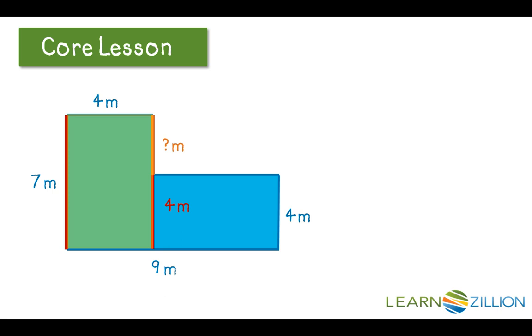So what that means is that this little mysterious orange line segment has to be 3 meters. Because 3 meters plus 4 meters will add up to 7, and I know that that side of the rectangle must be 7 meters.